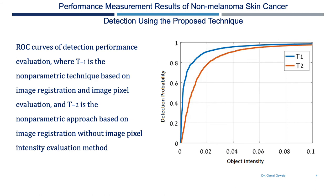This figure shows the result of the detection performance evaluation process. As you can see here, the ROC curves show that the metric technique based on image registration and image pixel evaluation T1 is better than the equivalent measurement in the case of the metric approach based on image registration without image pixel intensity evaluation method T2. This indicates that the presented method is an accurate segmentation method with 99.44% accuracy in detecting non-melanoma skin cancer.